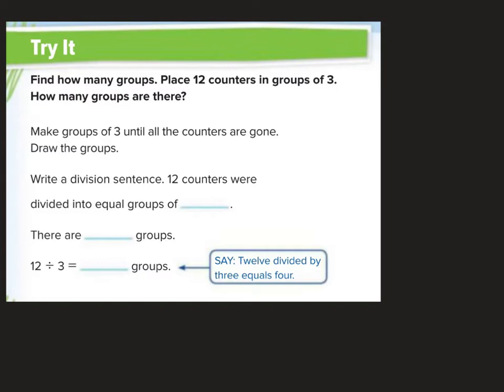Now try it on the next page — you can always pause if you need some extra time while you're turning or writing. It says: find how many groups. Place 12 counters in groups of 3. How many groups are there? I'm going to make groups of 3 until all the counters are gone.